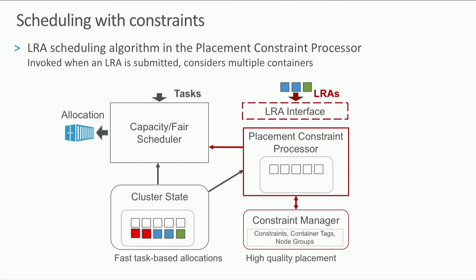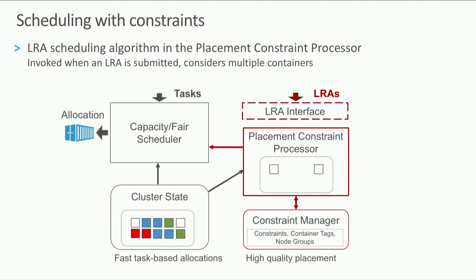When an LRA with three containers is submitted, the system detects they have constraints and routes them first through the placement constraint processor, which considers all containers at once to better satisfy constraints. Then they go through the capacity scheduler for actual placement and finally to the cluster. This way we achieve high-quality constraint satisfaction without affecting the low latency of existing task-based jobs.